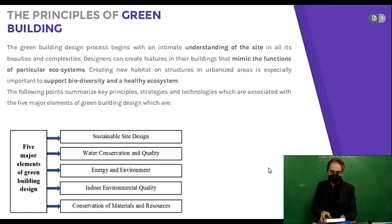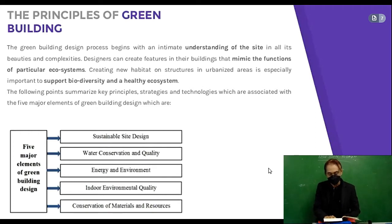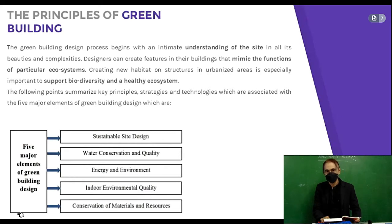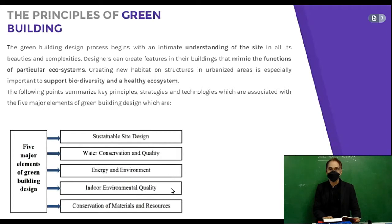The following points summarize key principles, strategies, and technologies associated with the five major elements of green building design: sustainable site design, water conservation and quality, energy and environment, indoor environmental quality, and conservation of materials and resources.